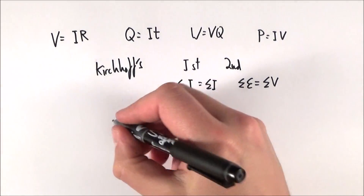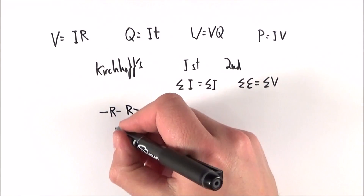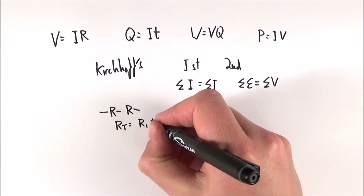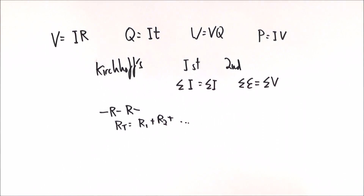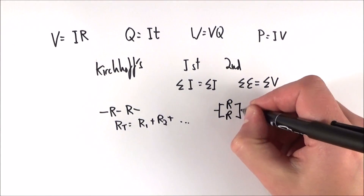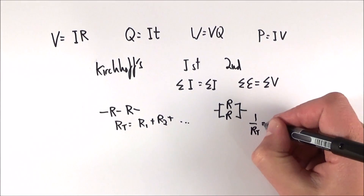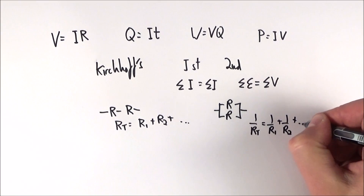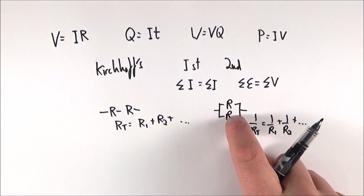If we have resistors in series, the total resistance RT is equal to R1 plus R2 plus however many resistors there may be. If the resistors are in parallel, then 1 over RT is equal to 1 over R1 plus 1 over R2, plus however many resistors we have in that combination.